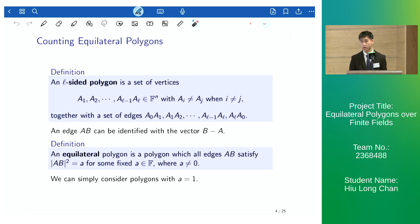An equilateral polygon is a polygon in which all edges satisfy the square distance is equal to some A for some fixed A, and we can simply consider polygons with the square distance being 1.